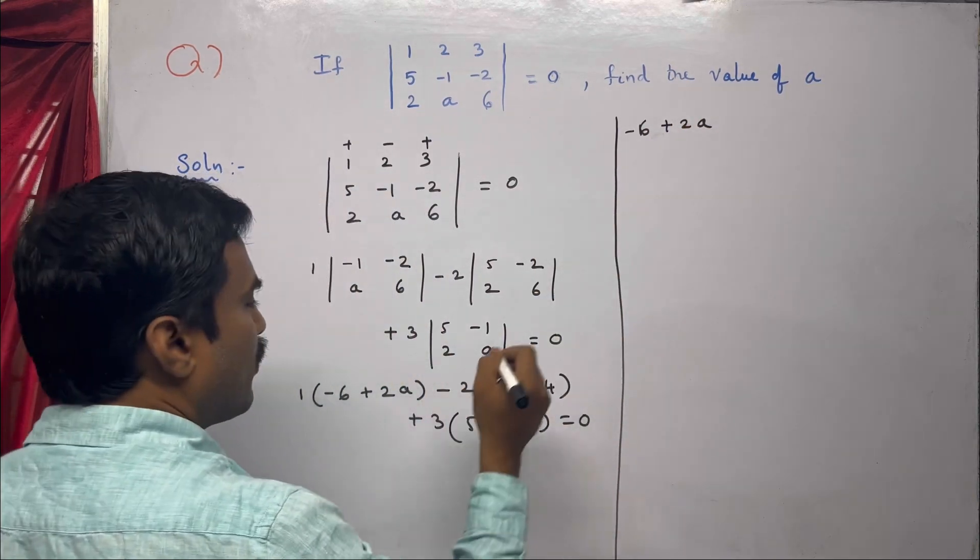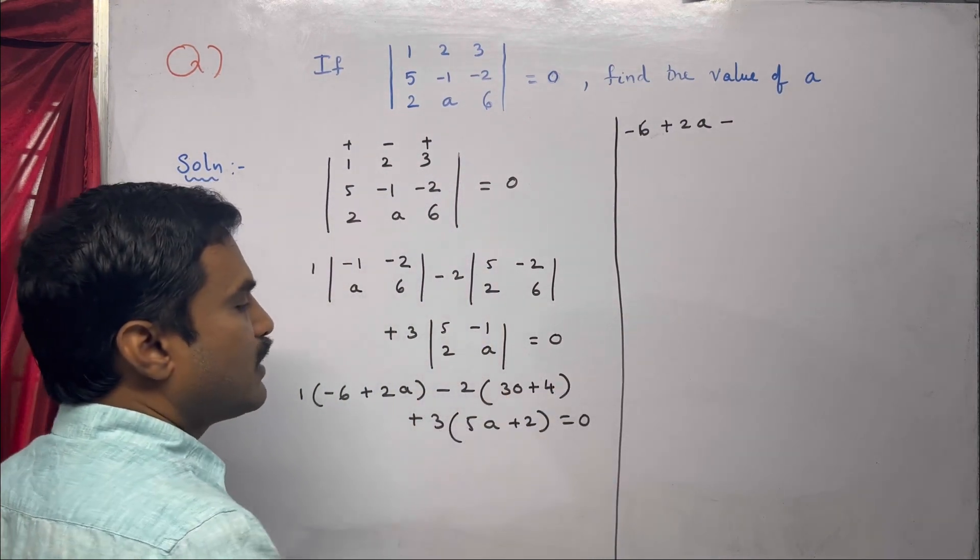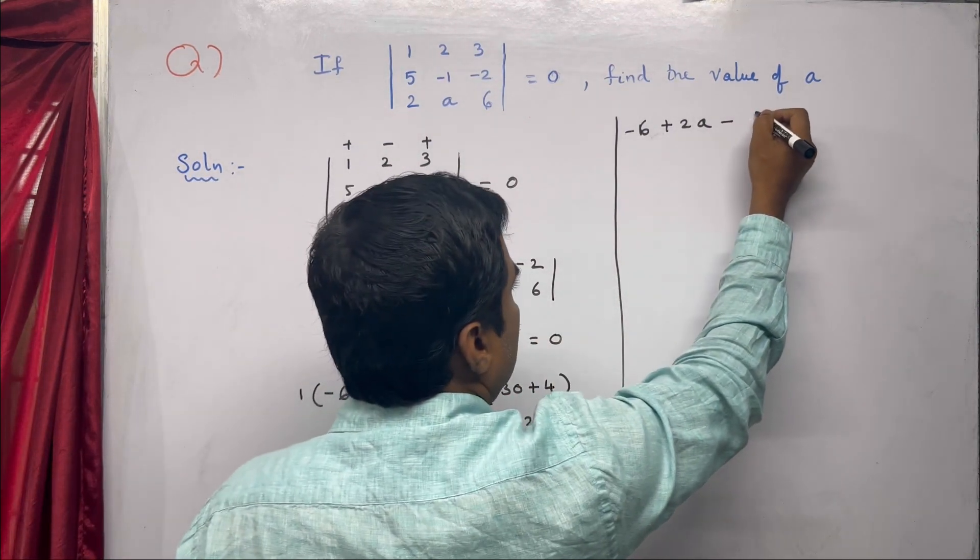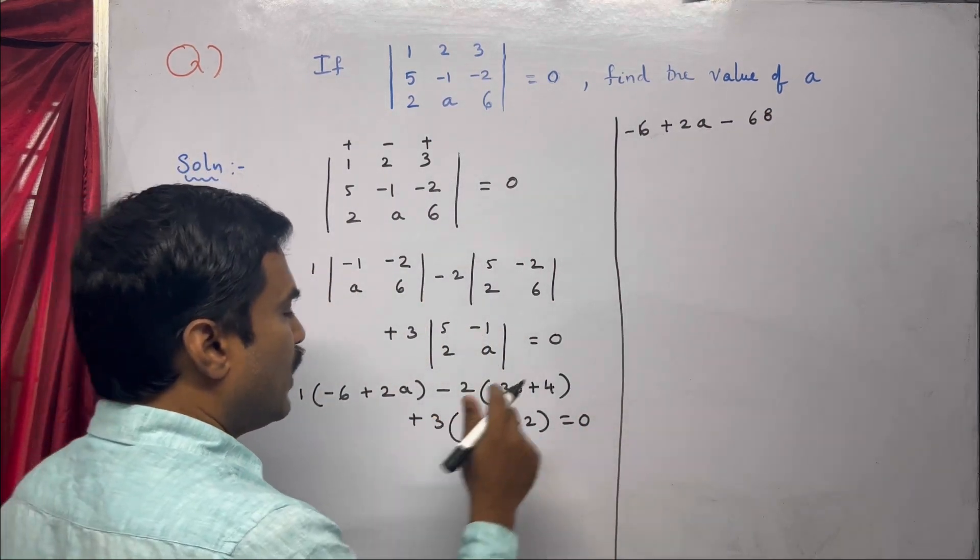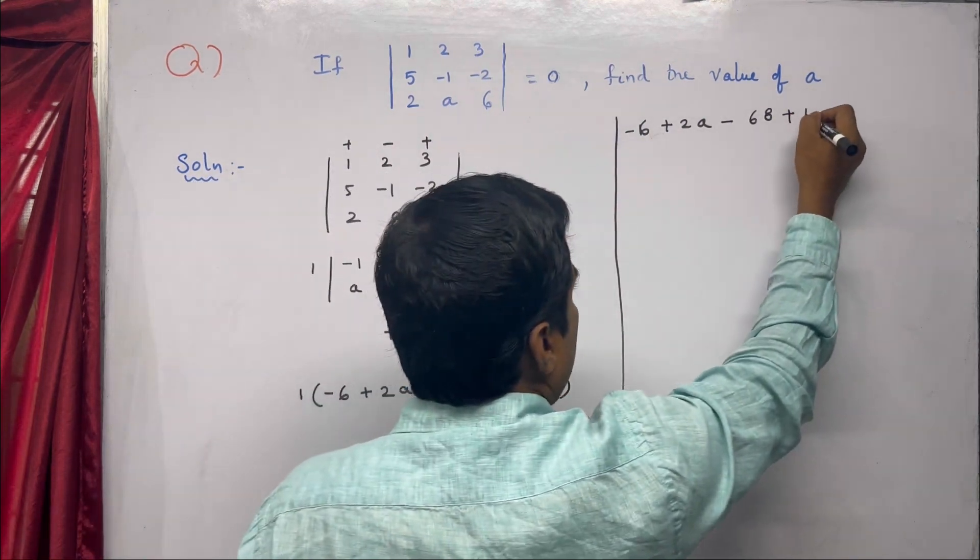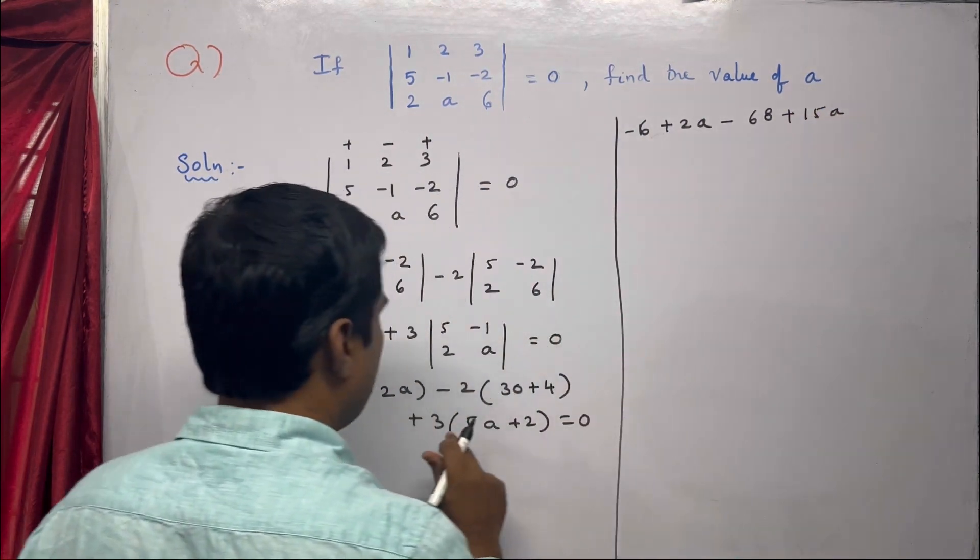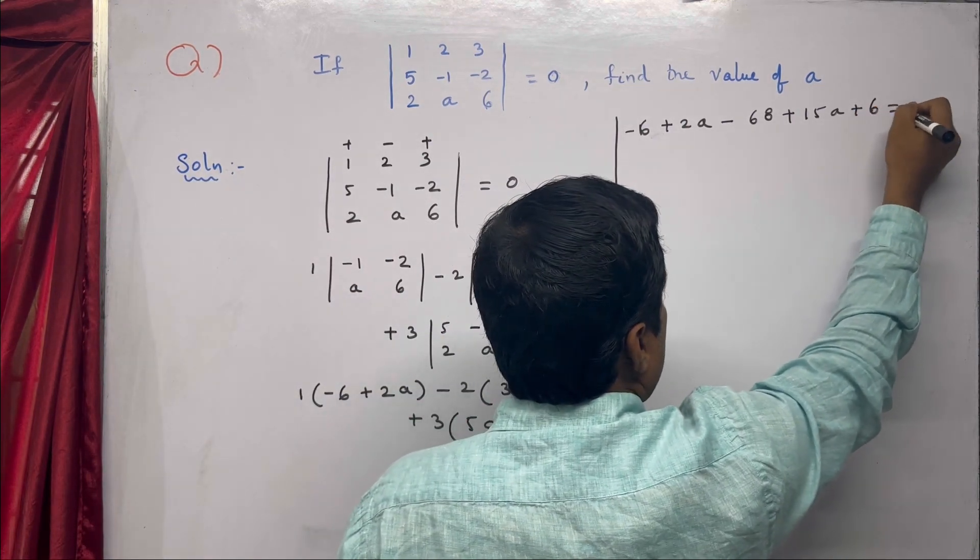The second term is -2 times 34, which equals -68. The third term is plus 3 times: 5 times a equals 15a, and 3 times 2 equals 6, so plus 6. This all equals zero.